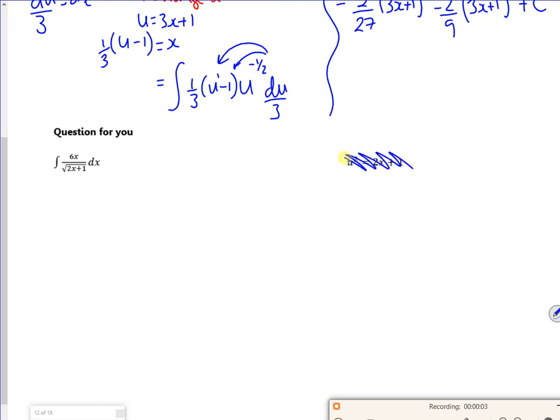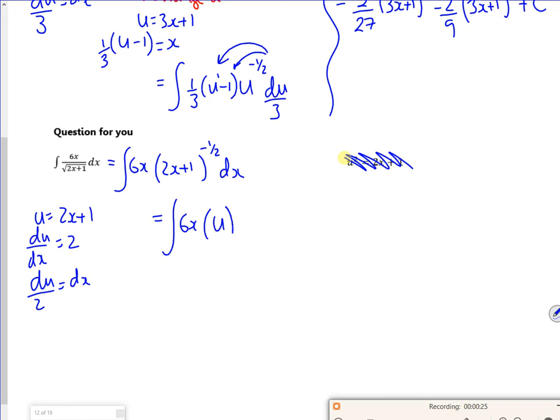So there's one for u, and it gives that bit. So we're going to do it as 6x times 2x plus 1 to the minus 1 half dx. So u is 2x plus 1, and du dx is 2, so du over 2 is dx. So it becomes 6x times u to the minus 1 half times du over 2.